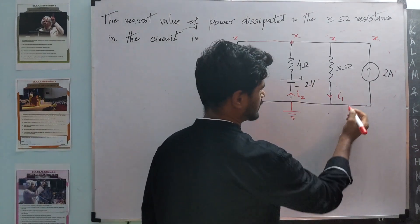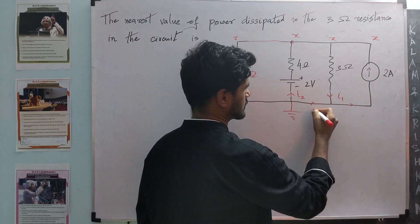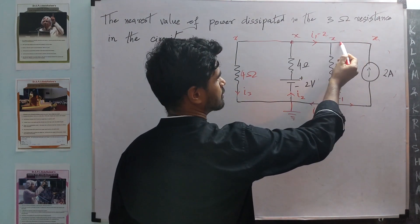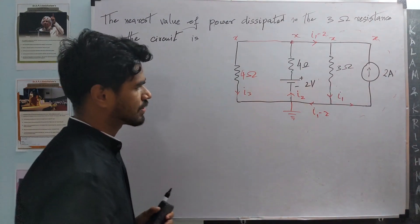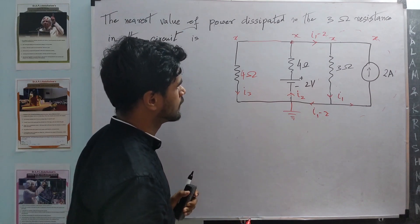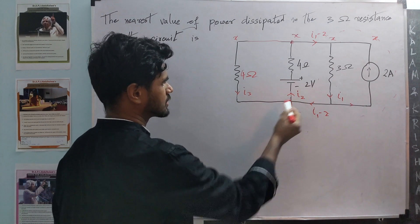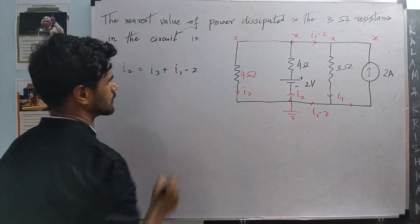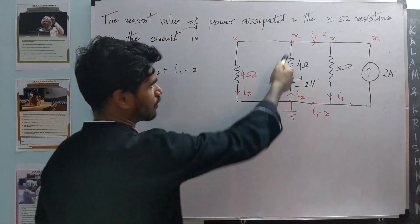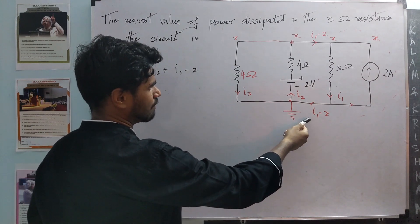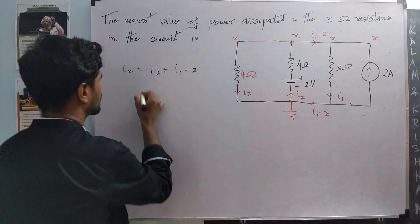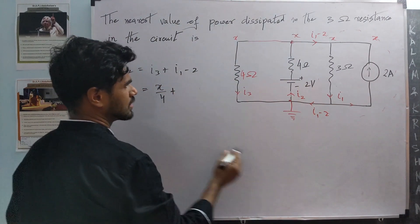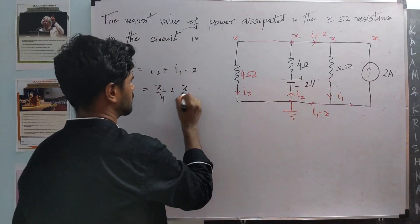Based on this, the current going into the node from the 2 ampere source branch is I1 minus 2. Similarly, this branch carries I1 minus 2. Let us pick the top node for our KCL equation since all unknowns enter here. We know I2 equals I3 plus I1 minus 2. Replacing with potentials: I3 is x by 4, and I1 is x by 3. So I2 equals x by 4 plus x by 3 minus 2, which becomes 7x by 12 minus 2.